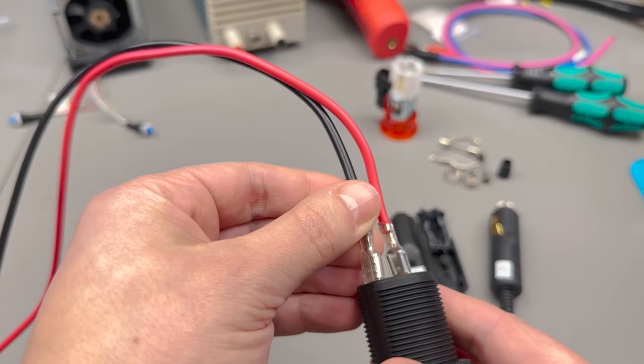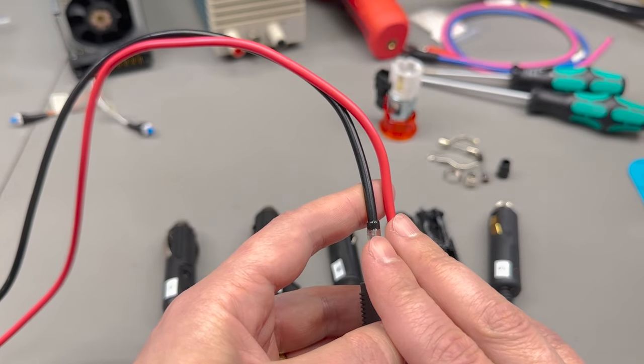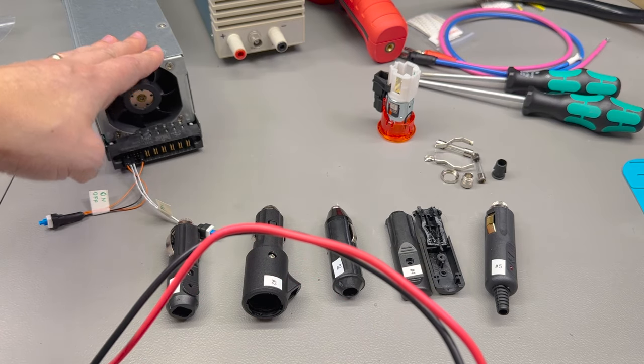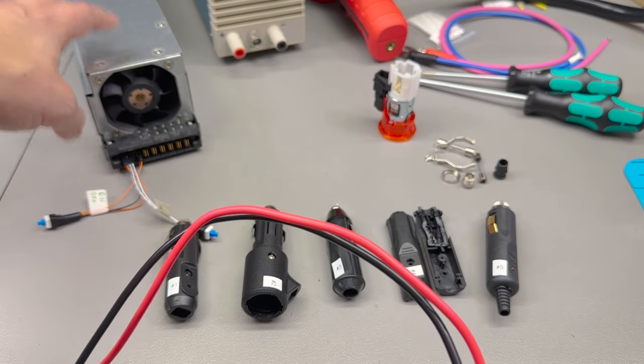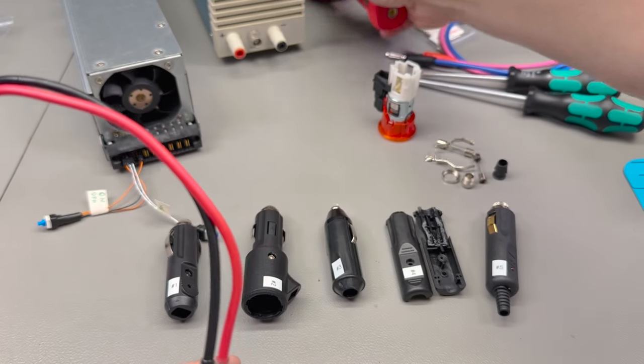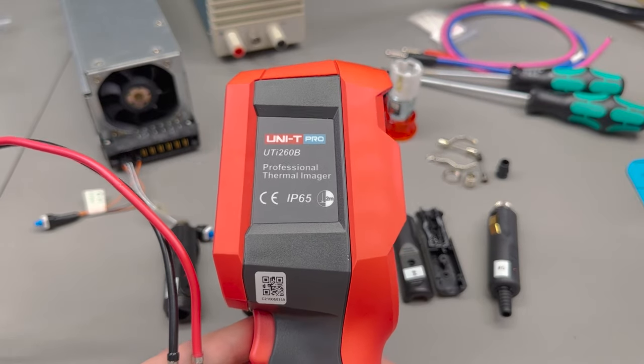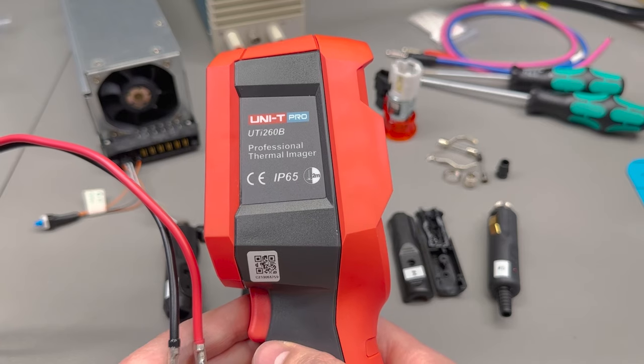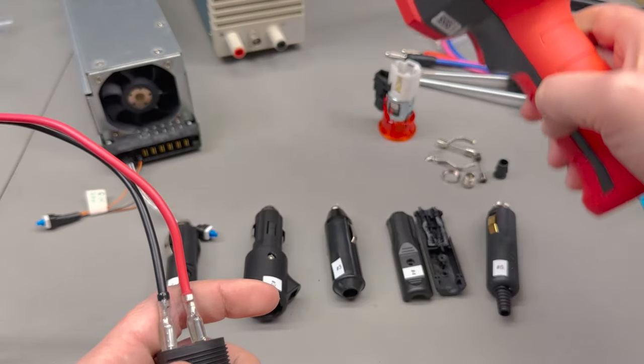This will be supplied via these 2.5 square millimeter wires, approximately AWG 13, from this Dell 12 volt server PSU which is more than capable of giving us 20 amps. It's rated for a maximum of 57 amps on the 12 volt rail, and it's going to sound like a jet engine throughout the test. I will be measuring the temperature with my Uni-T thermal camera. I also have a review of this on my YouTube channel.